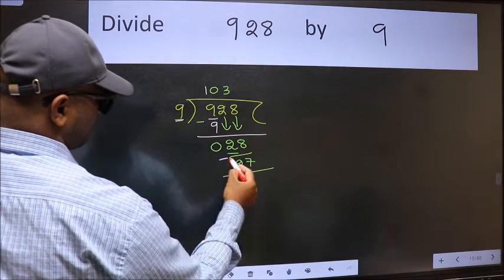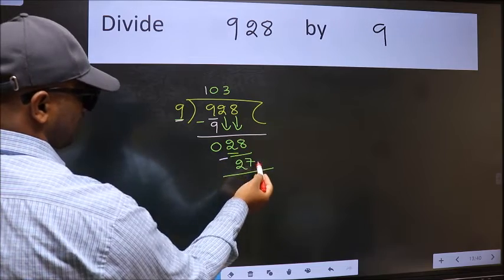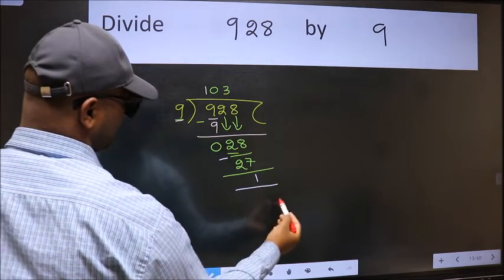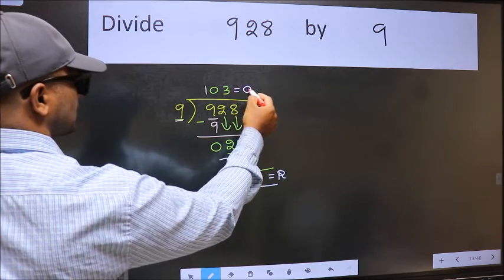Now we should subtract. We get 1. No more numbers to bring down, so we stop here. This is our remainder and this is our quotient.